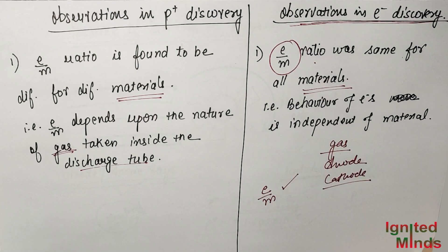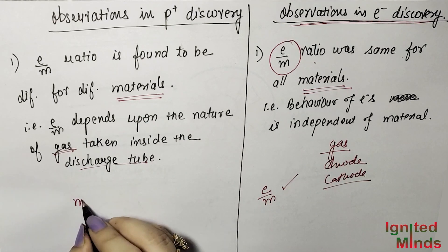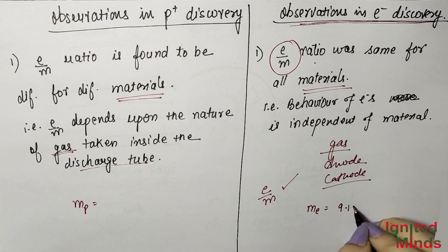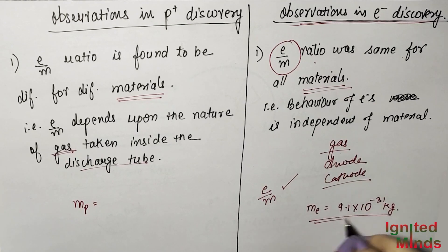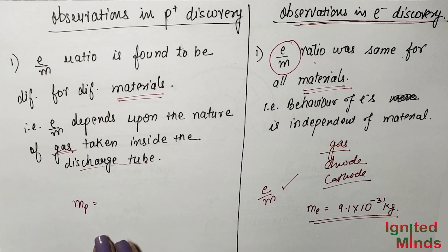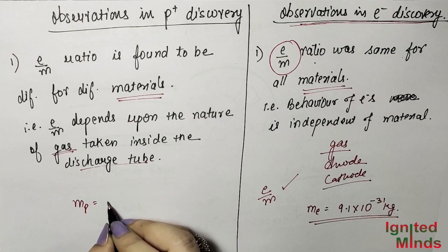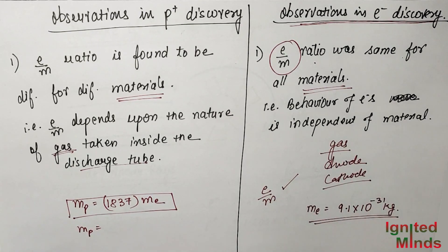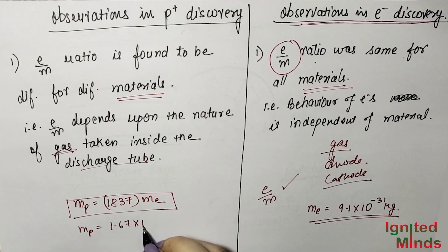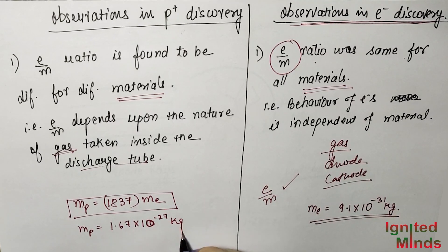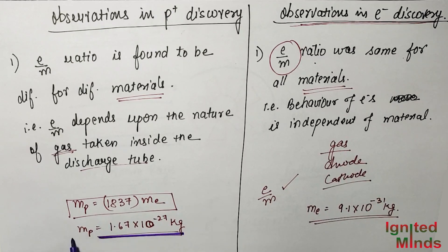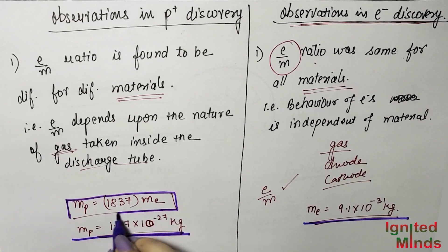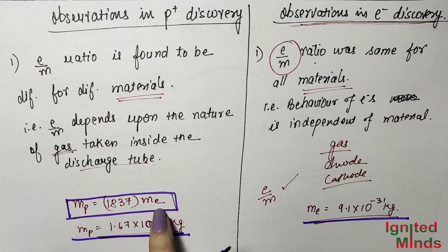Finally, it was found that the mass of a proton is much larger than the mass of an electron. The mass of an electron is 9.1 × 10⁻³¹ kg. The mass of a proton is 1837 times the mass of an electron, which equals approximately 1.67 × 10⁻²⁷ kg.